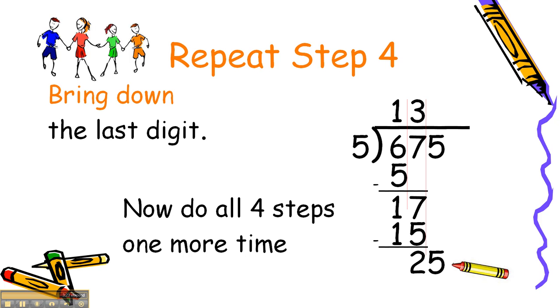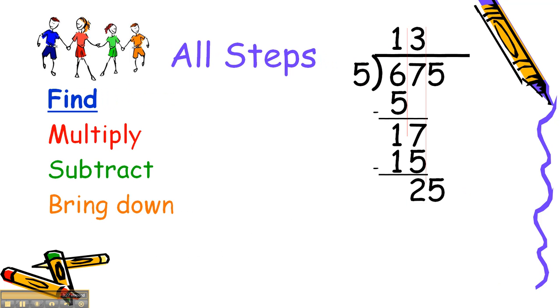Now, it's time to do all 4 steps one more time. Find. We're going to find a number to multiply by 5 that will get us as close as possible to 25. 5 would be the right answer.